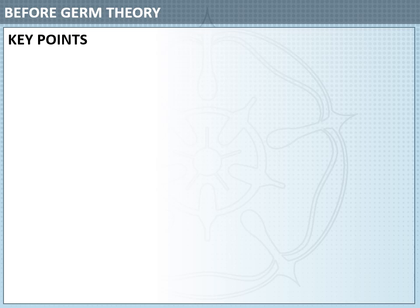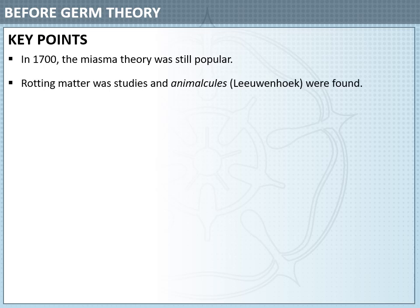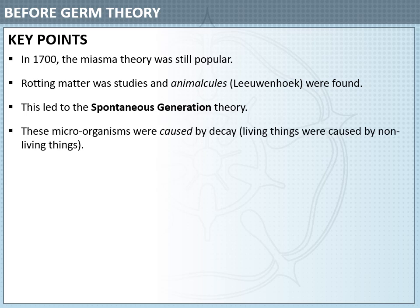Before we talk about germ theory, let's talk about what comes before. In 1700, the miasma theory was still very popular as a theory to explain what caused disease or where it came from. Because of this, scientists and doctors were very keen to study rotting or decaying matter. They found tiny organisms on this rotting matter, and that led them to create the spontaneous generation theory — the idea that these microorganisms were caused by the decaying matter, or that living things were caused by non-living things.